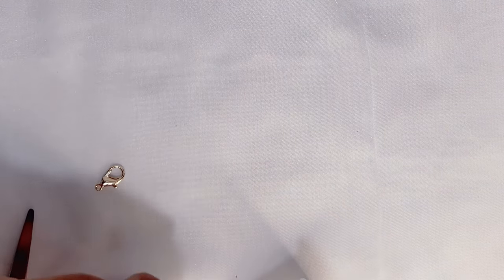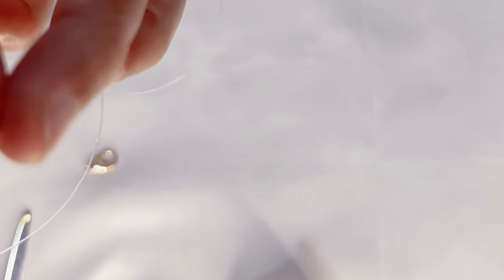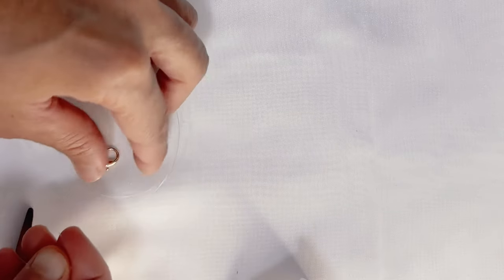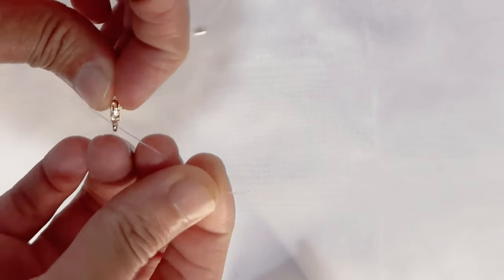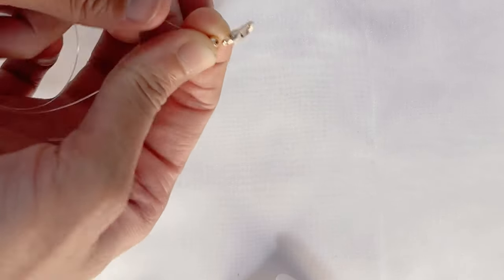Now insert one end bead like this. Then insert lobster clasp. And now go through the end bead. Now see, the end bead and the lobster clasp is now together.